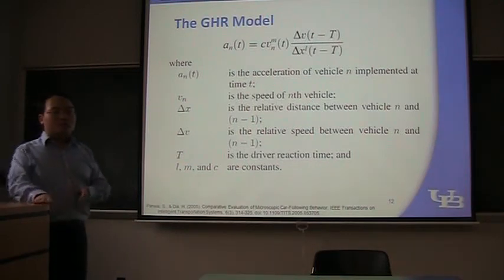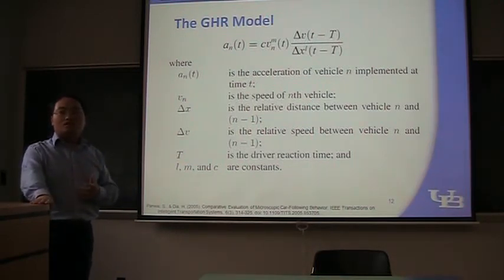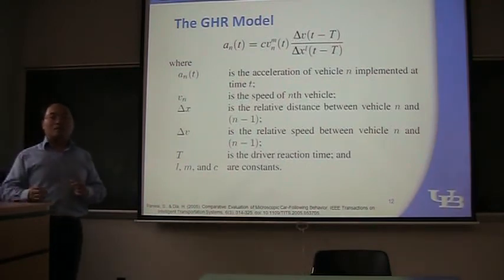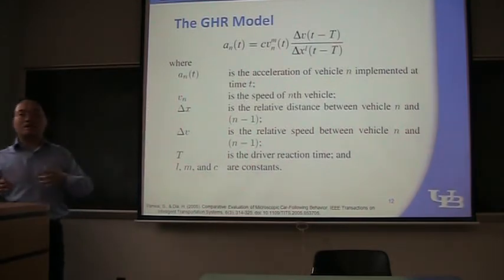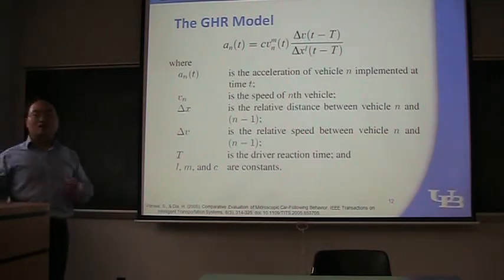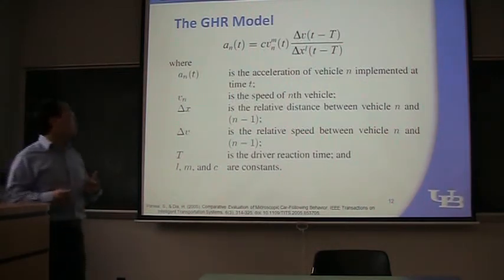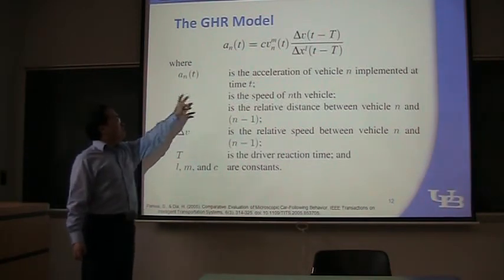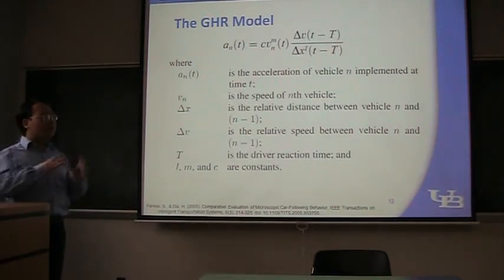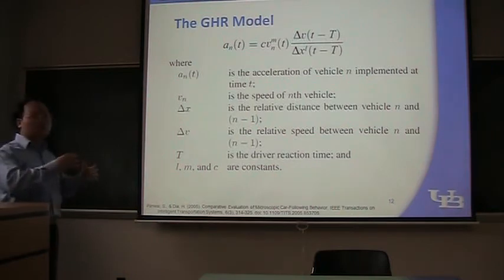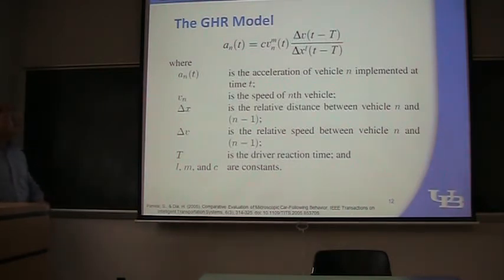And here I want to mention the model. When you are using a model, you first have to understand if this model is derived by consequence or by statistics. This model is derived by statistics. You ought to understand that. And this equation, as it's derived by statistics, we cannot understand its meaning. We cannot explain it with logic. But we can find some problems with it. This T and T minus capital T, that's good. It represents the reaction time.